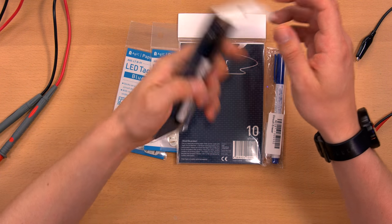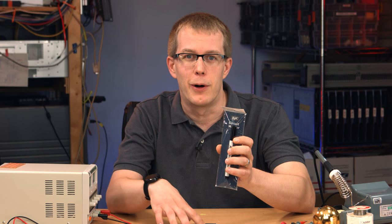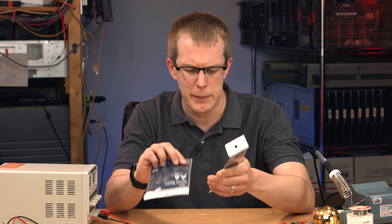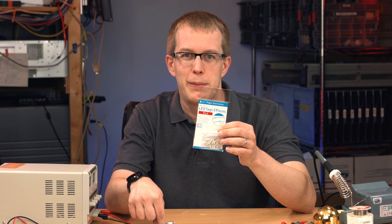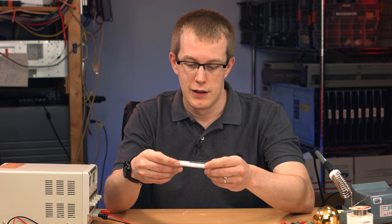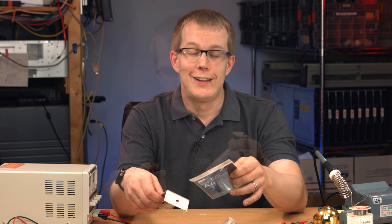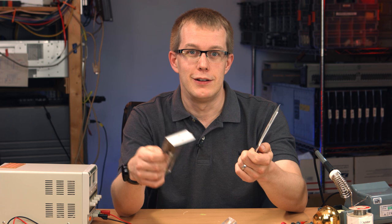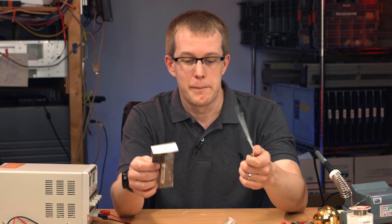I haven't tested it out yet, but this is the AGIC circuit marker and some maid paper, which is I think pretty much just photo paper, some LEDs that are able to stick onto this paper, and a circuit eraser pen. The idea is that you draw on this paper with this marker and it creates a conductive path and you can prototype a circuit with it. You can learn more about AGIC at the website agic.cc.